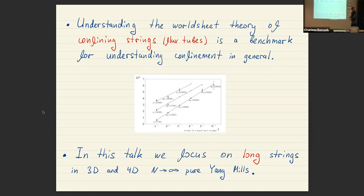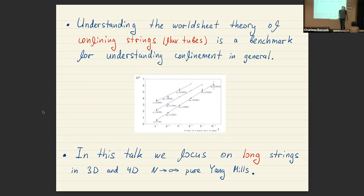Understanding the world sheet theory of confining strings is a very important step in understanding confinement itself. From the famous plots of Regge trajectories in the hadronic spectrum, we know that the string is a real object in QCD. In this talk we focus on pure Yang-Mills in the planar limit, in both three and four dimensions.